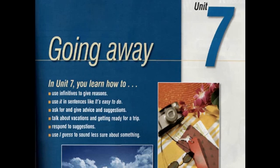Dear students, today we will start with Unit 7, Lesson A. The title of this unit is 'Going Away.' In Unit 7, you will learn how to achieve around 6 main objectives. في هذه الوحدة هناك 6 أهداف أساسية يجب علينا تحقيقها مع نهاية هذه الوحدة.